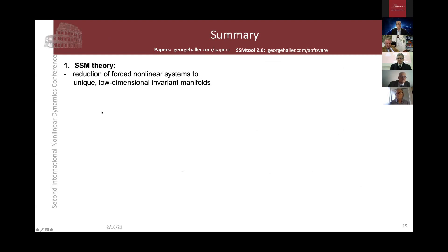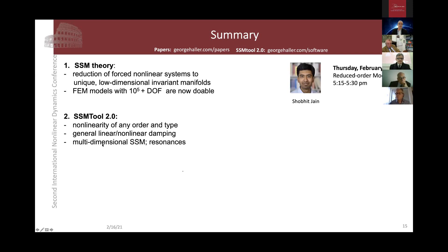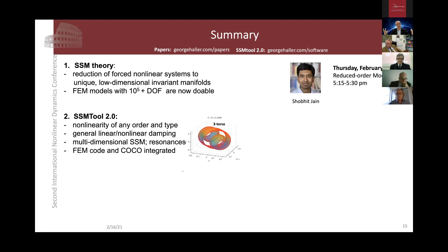In summary, SSM theory is a reduction of any forced nonlinear system to a unique low-dimensional invariant manifold. With these new advances, this has stepped out of purely academic beauty and become directly applicable to very high-dimensional finite element-grade systems. SSM 2.0 is a free open source code that handles nonlinearities of any order and type, general nonlinear damping, multi-dimensional SSM resonances — including internal resonances and bifurcations. We can now obtain three-dimensional tori in very high-dimensional phase spaces for finite element problems. Shobit will talk more about the details in the reduced order model session on Thursday at 5:15.